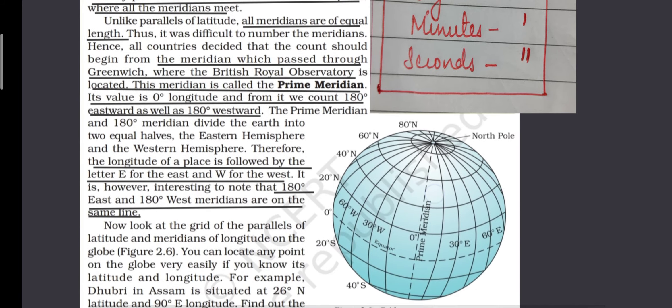In the image you can see where 30 degree W is written. This W is important in order to show that this place is on the western side.